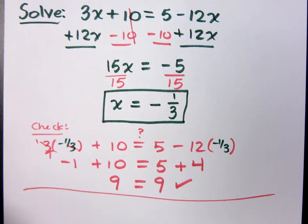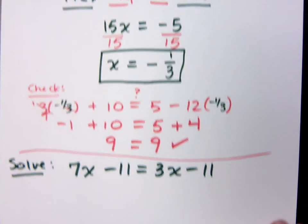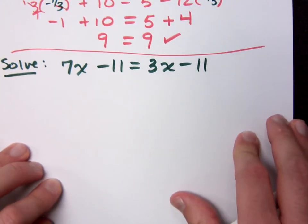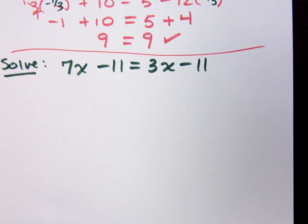Alright, how about this guy? If I have 7x minus 11 equals 3x minus 11. That's good. Are you going to start shouting numbers? 72! Negative on the fiftieth.